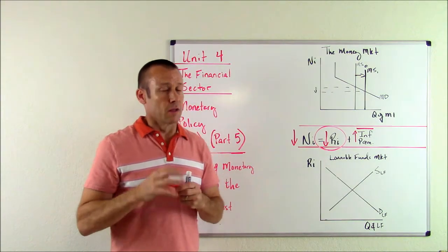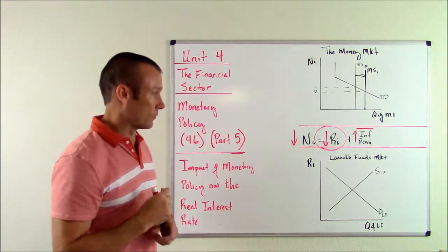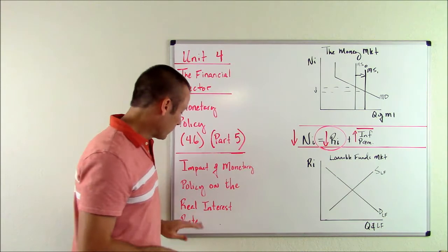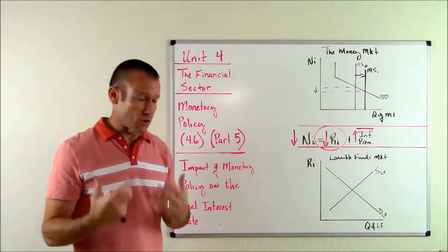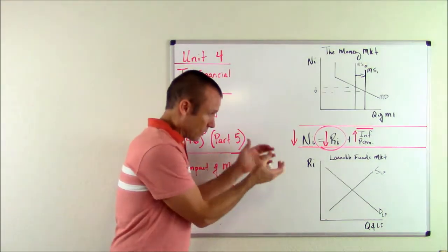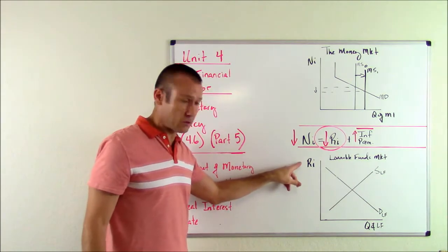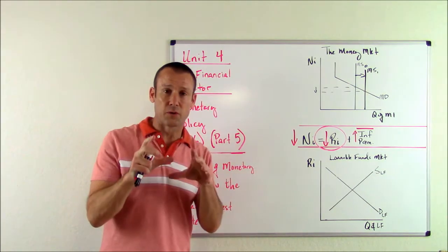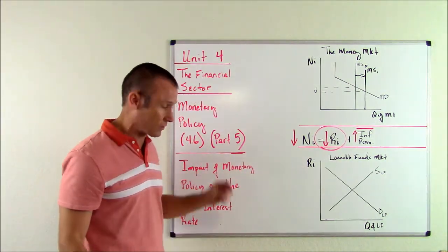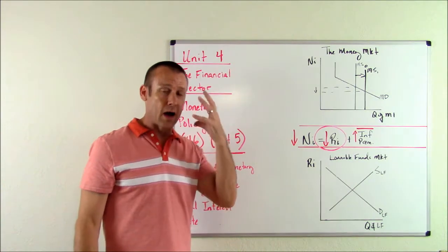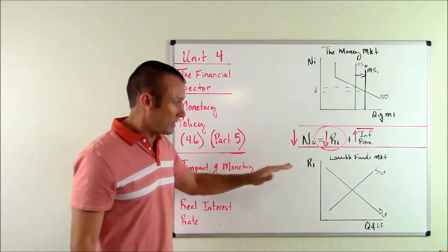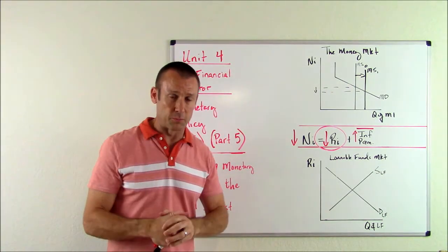Now let's talk about it in a different way. I've got the loanable funds market. If we get questions about the real interest rate, it is often a place we want to go, because the vertical axis of the loanable funds market is the real interest rate. So when we have questions about the real interest rate, we know the tool that has the real interest rate on it — it's the loanable funds market.